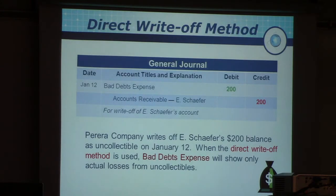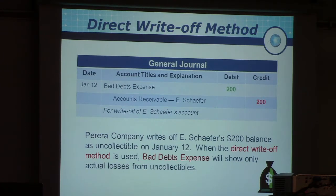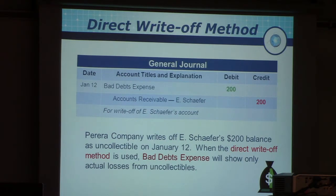In the direct write-off method, you wait for the customer not to pay before you write it off. Everything proceeds normally with debit AR, credit sales. But when the customer sends a letter or email saying they won't be able to pay, you then debit bad debts expense and credit AR for that particular account. Bad debts expense is an expense account that goes on the income statement, not the balance sheet. Bad debts means you extended credit and the promised payment never actually occurred.